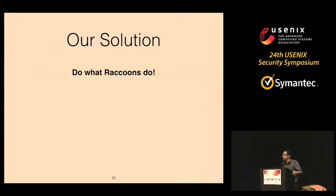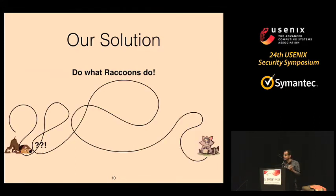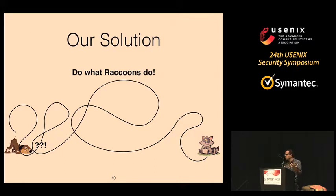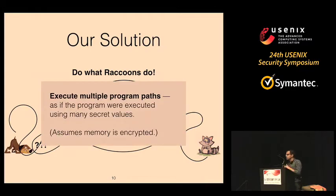We actually do what raccoons do in the wild. Whenever a raccoon is being chased by a predator, it doesn't necessarily try to outrun it. It creates multiple fake paths — going around a tree a few times, jumping into a stream, doubling back, climbing a tree, jumping from one tree to another, and then continuing along its way. As a result, predators like dogs are typically confused or keep going in circles. We apply that analogy to program execution by executing multiple program paths to convey the impression that the program was executed with multiple different secret values.